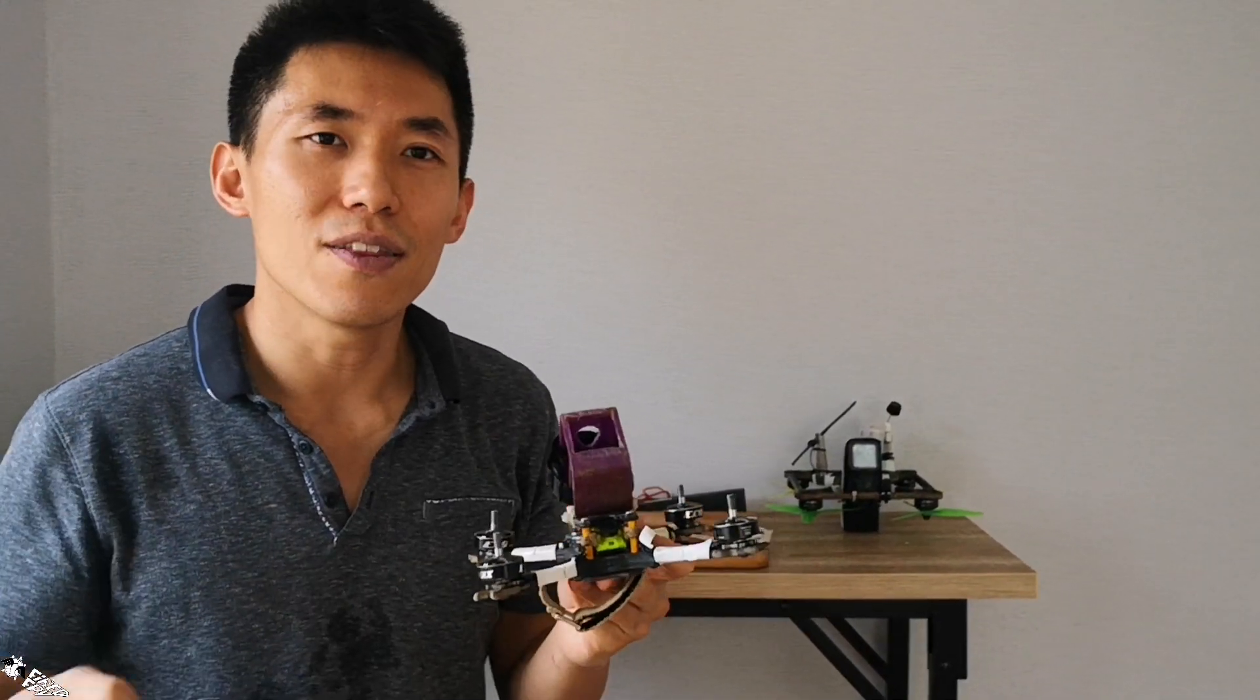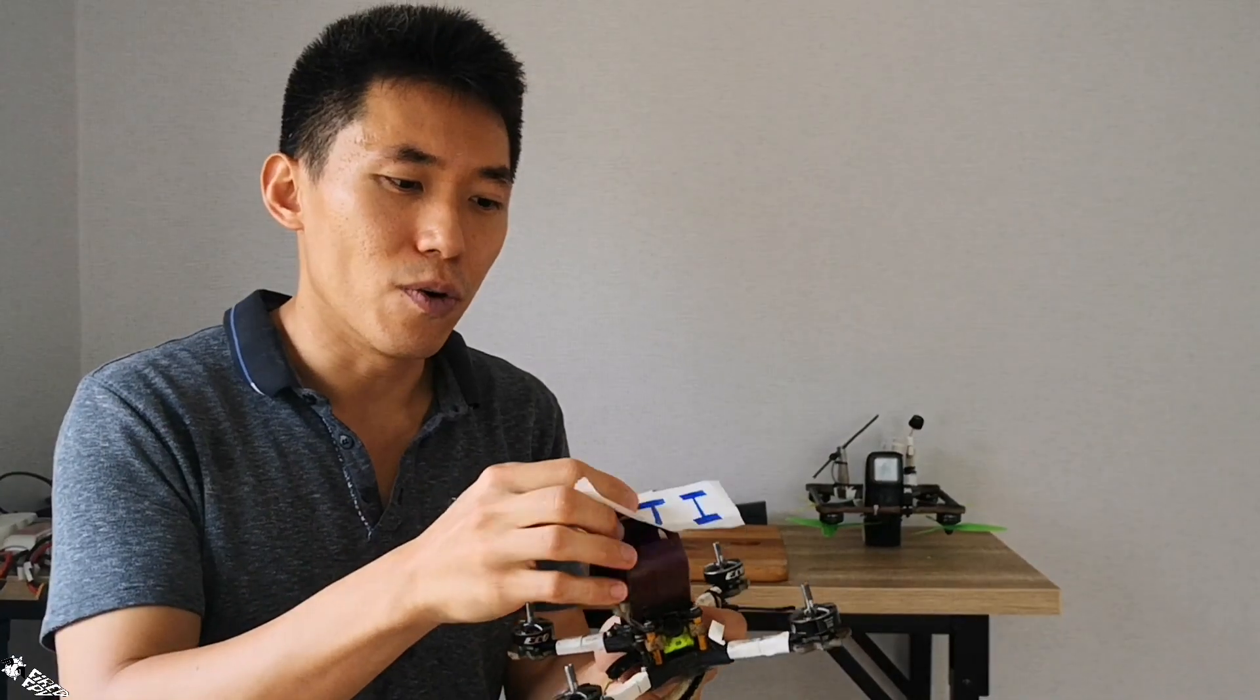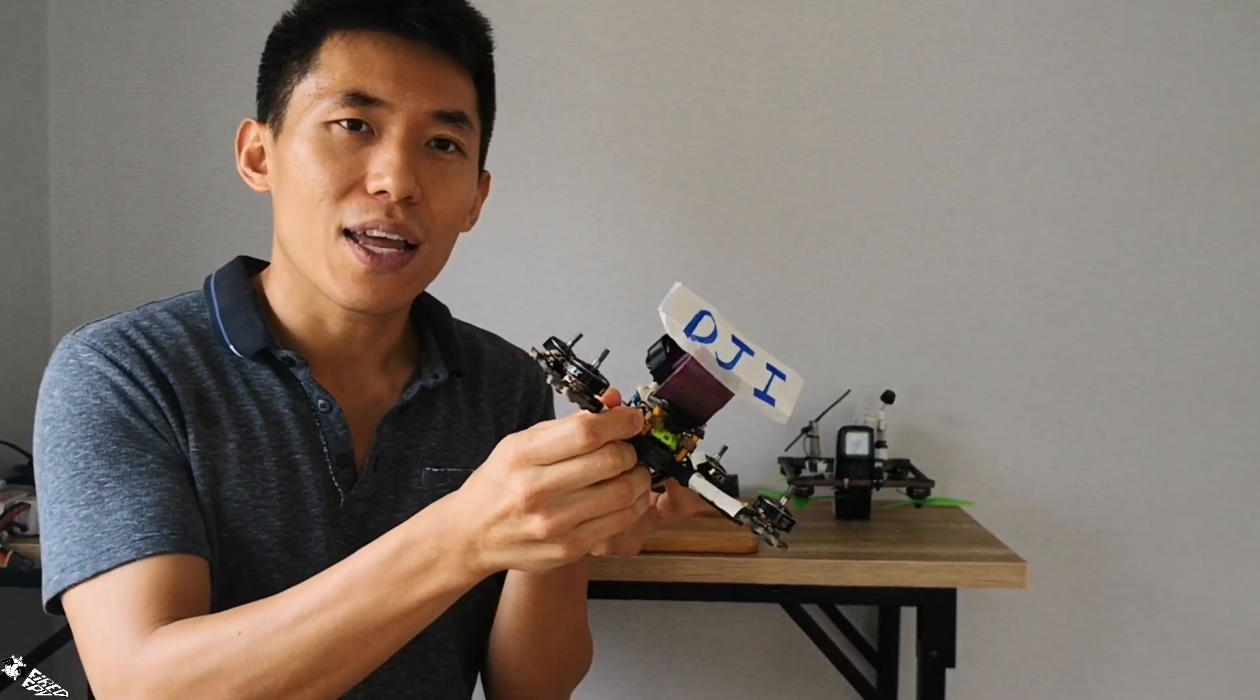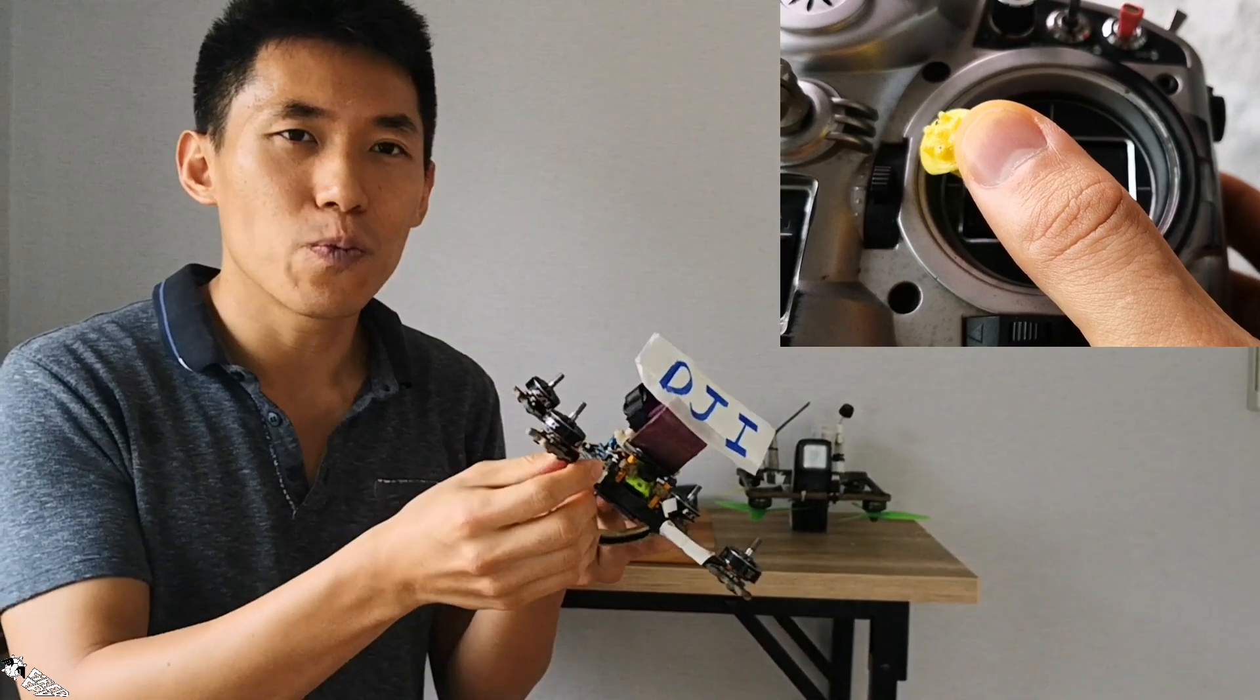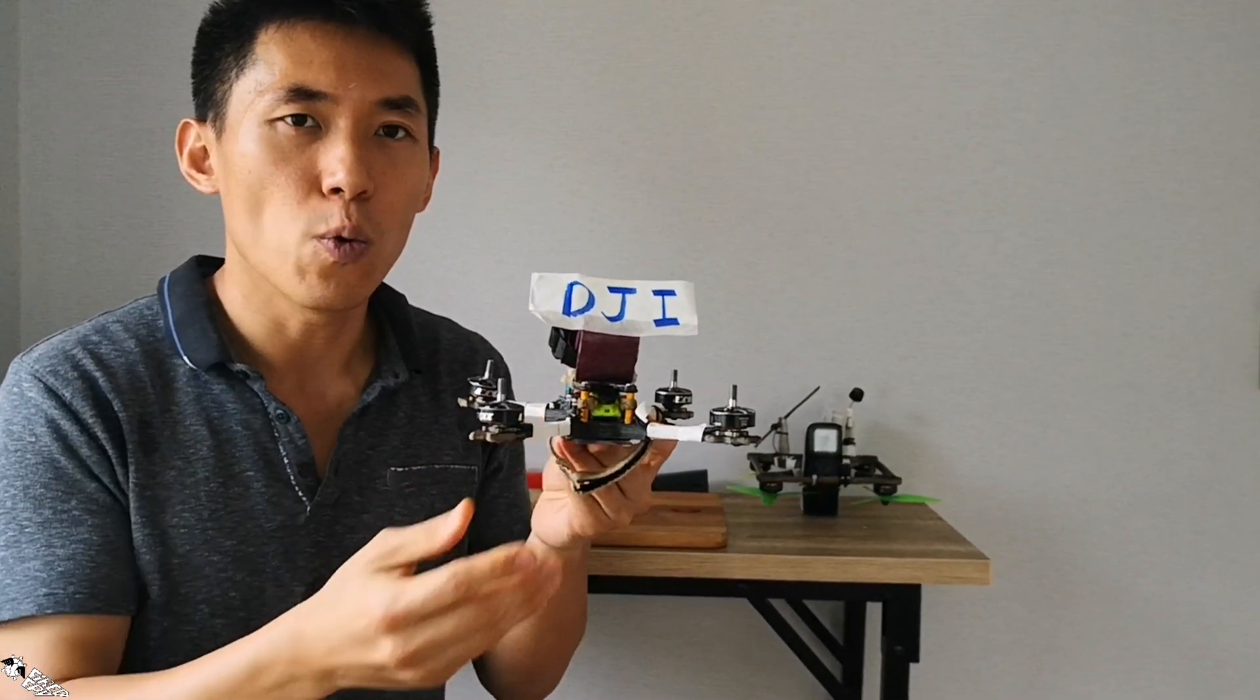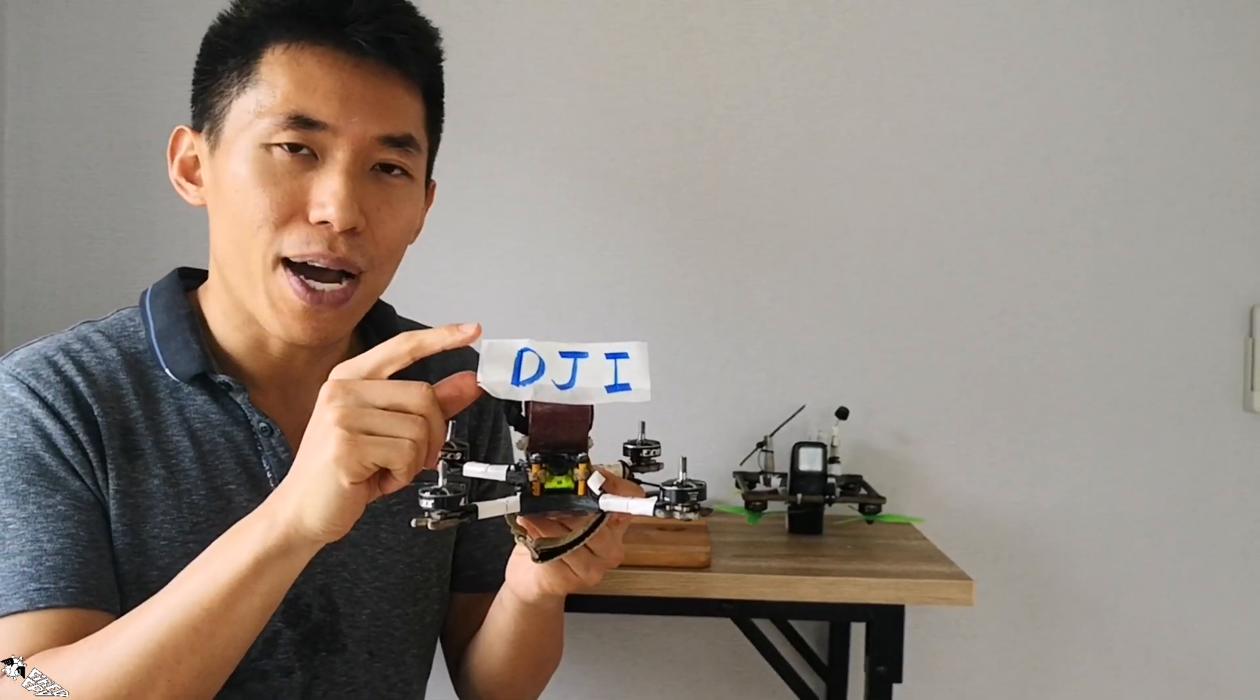The second difference happens when you return the stick to center. For example, if you are flying Angle Mode drone, let's say DJI again, and you are banking left or right, and you return the stick to center, what happens to the drone is that it will return to wing level attitude. Wing level is that the drone is parallel to the ground.